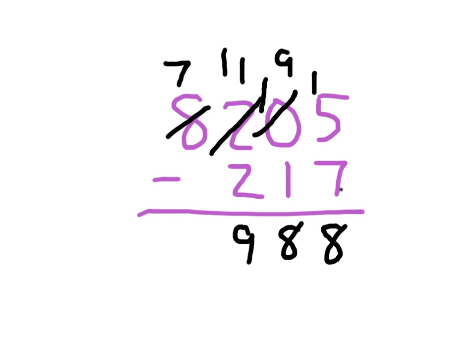11 minus 2 is 9. And 7 comes straight down there, because 7 minus 0 is 7. 8,205 minus 217 does equal 7,988.